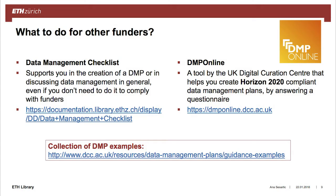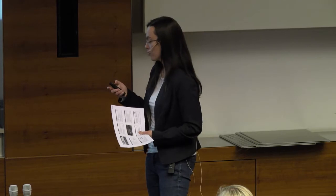Of course, not everybody is funded by the SNF. For Horizon 2020, you can use the DMP Online tool — a free online tool by the UK Digital Curation Centre that helps you create a compliant plan. You log in, create a free account, and are guided through a questionnaire. When you've answered all questions, you can download a Word or PDF document which is the Horizon-compliant data management plan to submit with your proposal.